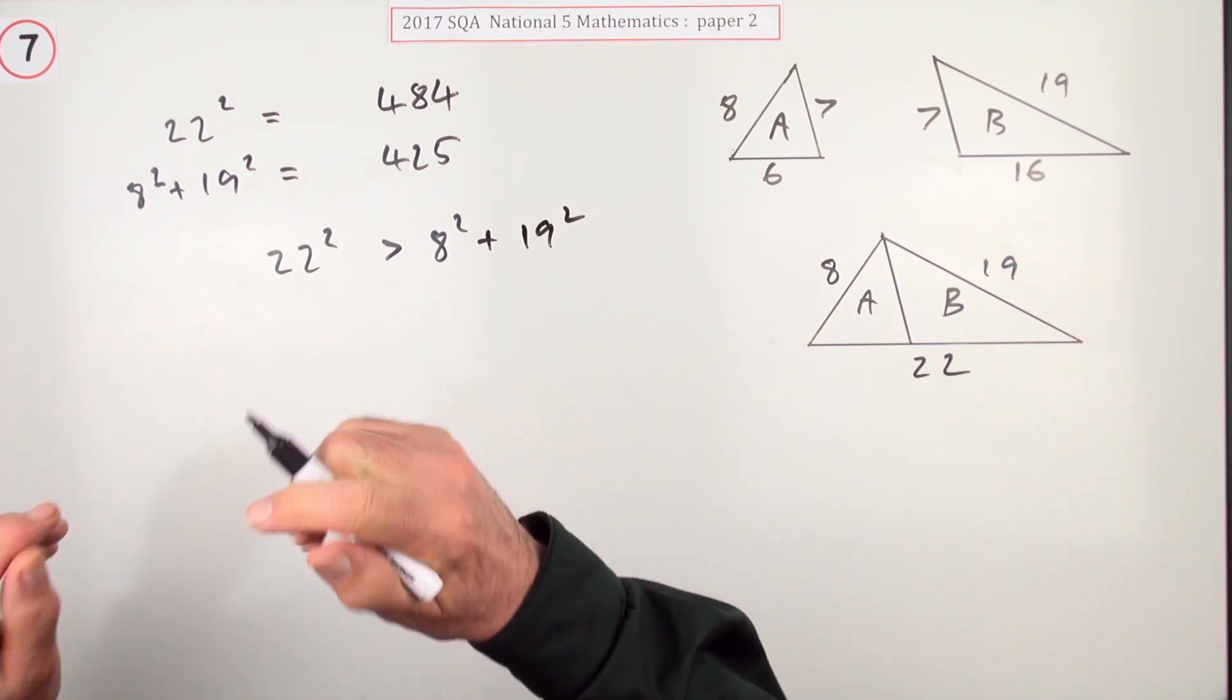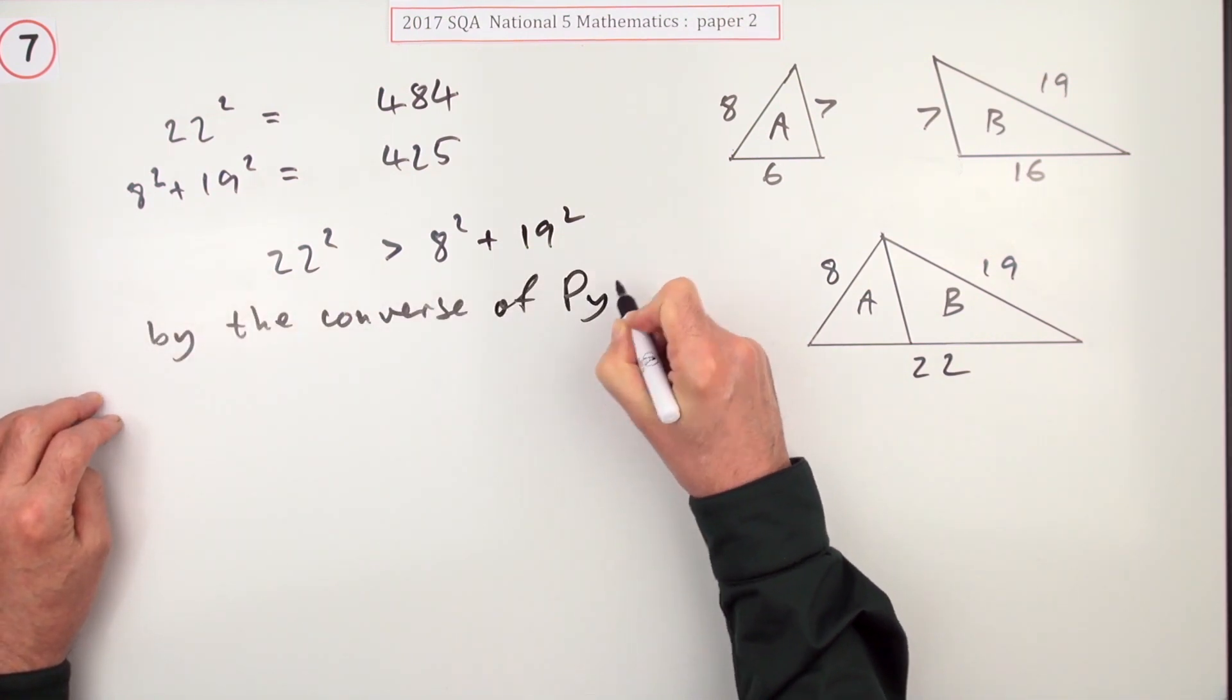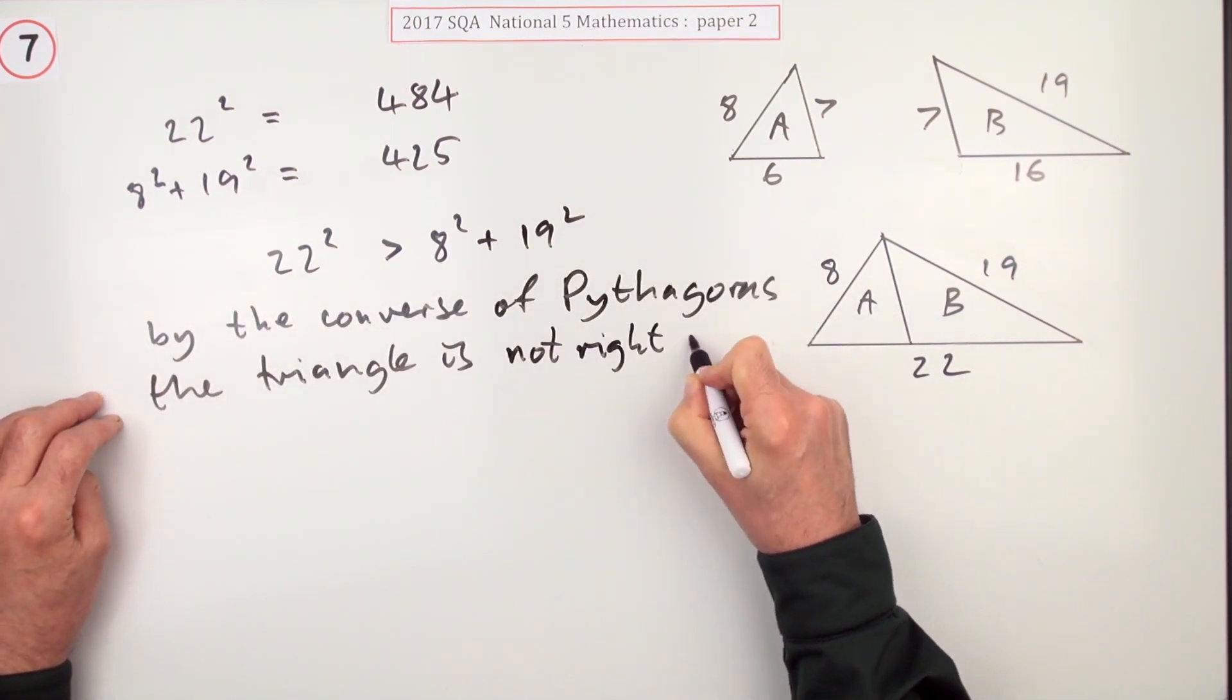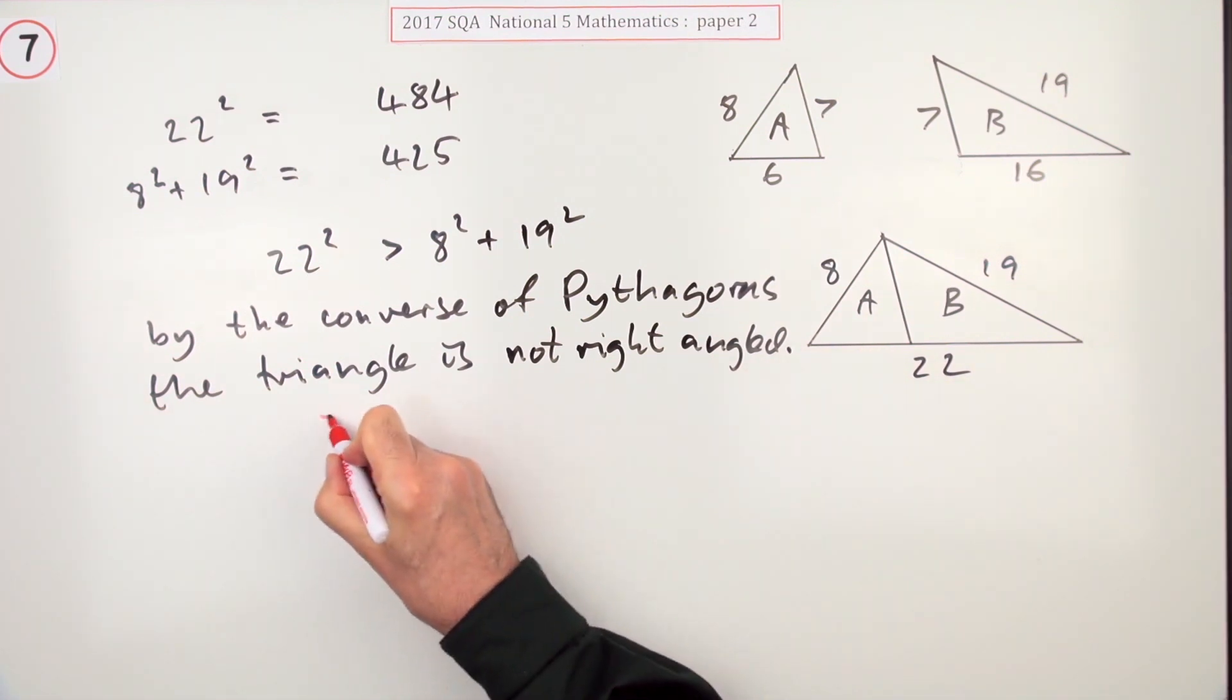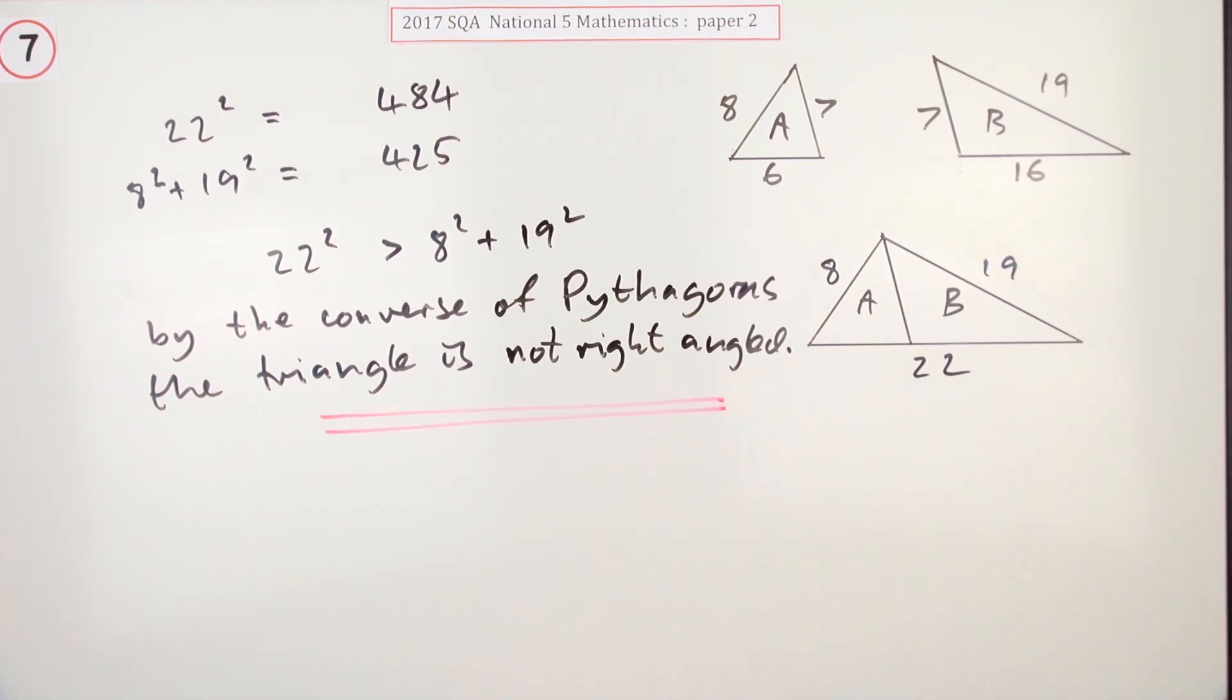It just said: is it right-angled? So you write this statement down. By the converse of Pythagoras, the triangle is not right-angled.